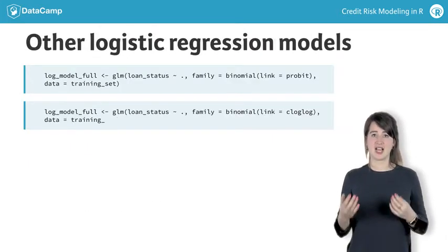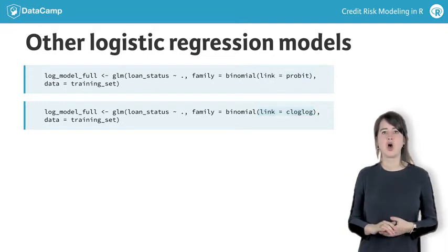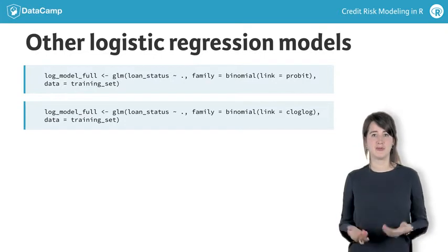Alternatives exist, such as the probit and the cloglog link functions. Although I won't discuss these variations in detail, they're worth mentioning.